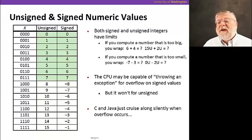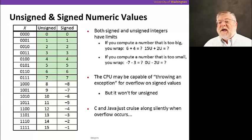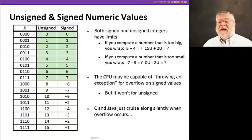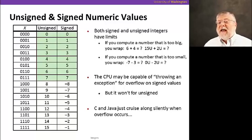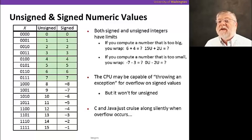The CPU, when given these kinds of arithmetic operations, will throw an exception, meaning it will signal that it got a number it can't represent. It does that for signed values, but most CPUs do not do this for unsigned values. C and Java will just cruise along and not bother checking whether the arithmetic was correct. So you have to do an explicit check if you really want to know if the arithmetic worked out correctly.